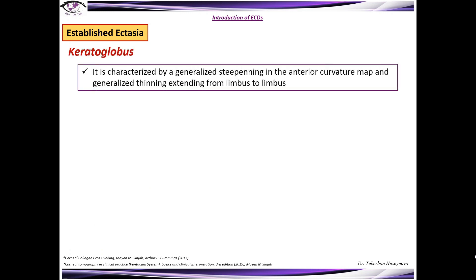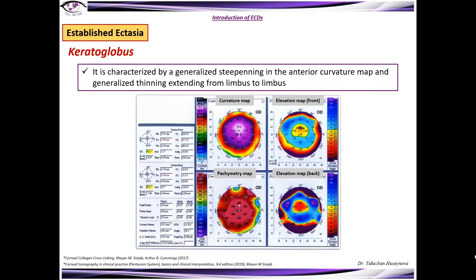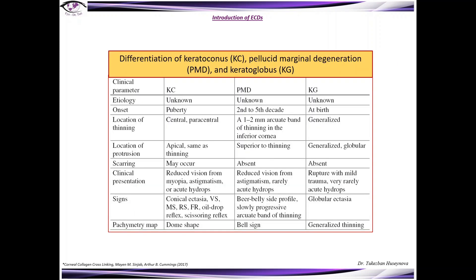Keratoglobus is characterized by generalized steepening on the anterior curvature map and generalized thinning extending from limbus to limbus. This table presents all clinical parameters for differentiation of keratoconus, PMD, and keratoglobus based on etiology, onset, location of thinning and protrusion, scarring, clinical presentation, signs, and pachymetry map.